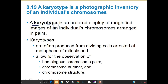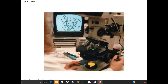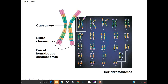A karyotype is an ordered display of magnified images of an individual's chromosomes aligned in pairs. Karyotypes are often produced from dividing cells arrested at metaphase of mitosis, and they give us information about homologous chromosomes, chromosome number, and chromosome structure. Based on centromere position, length, and staining patterns, chromosomes are sorted and numbered — if only two copies appear at each position, the karyotype looks normal.